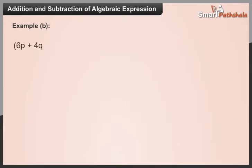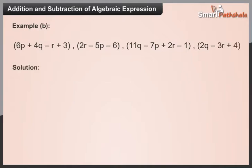Add 6p plus 4q minus r plus 3, 2r minus 5p minus 6, 11q minus 7p plus 2r minus 1, and 2q minus 3r plus 4. Solution: 6p plus 4q minus r plus 3, plus 2r minus 5p minus 6.